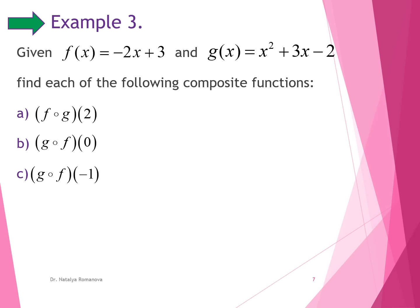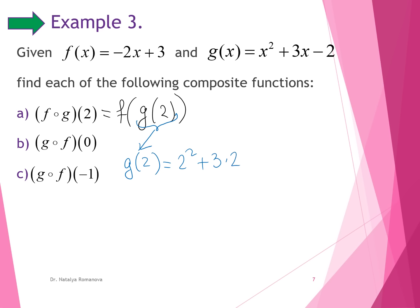Example 3: we evaluate the composition of functions f of x equals negative 2x plus 3 and g of x equals x squared plus 3x minus 2 at x equals 2. We write f of g of 2 and evaluate the inner function first: g of 2 equals 2 squared plus 3 times 2 minus 2, giving us 4 plus 6 minus 2, which equals 8.